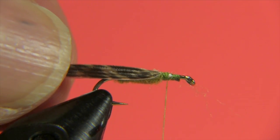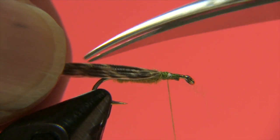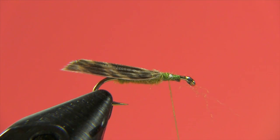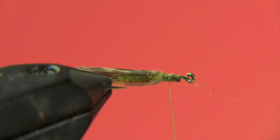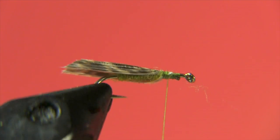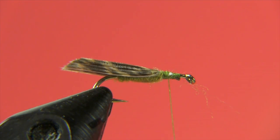And I'm just going to fold that and I'm going to come in well behind the gape of the hook and cut off the slip. So now we've got roughly the shape of our caddis wing all in one piece. Nice and easy to do.